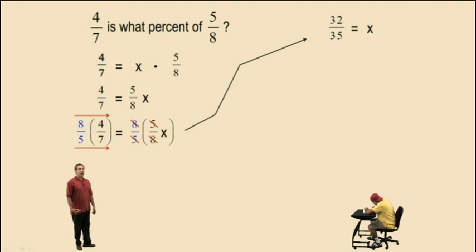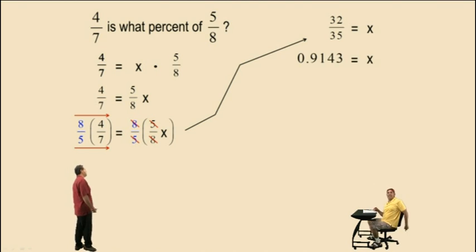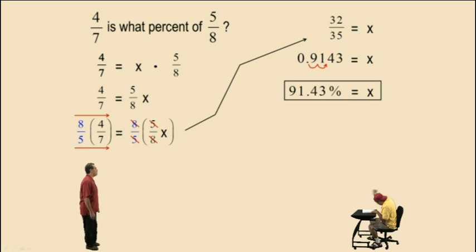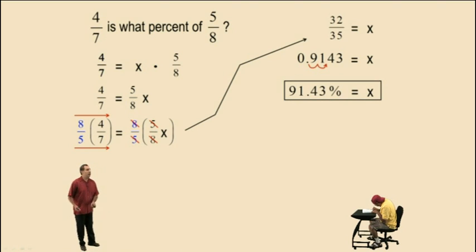Now, we have to calculate 32 divided by 35. Charlie, what'd you get? 32 divided by 35. 0.9143. Very nice there, Charlie. That's rounded to the nearest ten thousandths. And now, we need to change our decimal to a percent, because x represented the percent we were looking for. So we move the decimal two places to the right, and we end up with 91.43% for our final answer. And that percent, that final percent, is rounded to the nearest hundredth of a percent.